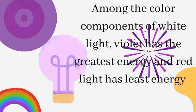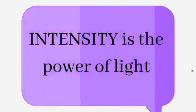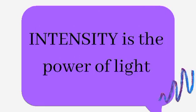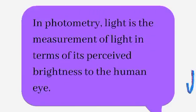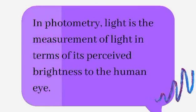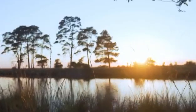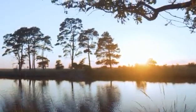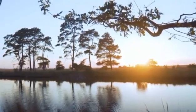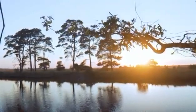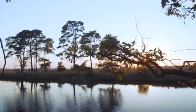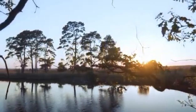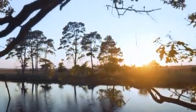Now let's proceed to another characteristic of light: intensity. Intensity is the power of light. In photometry, it is the measurement of light in terms of its perceived brightness to the human eye. Brightness of light depends on the source and the distance from it. Brightness is qualitative — the more intense the light that reaches us, the brighter it appears to be.